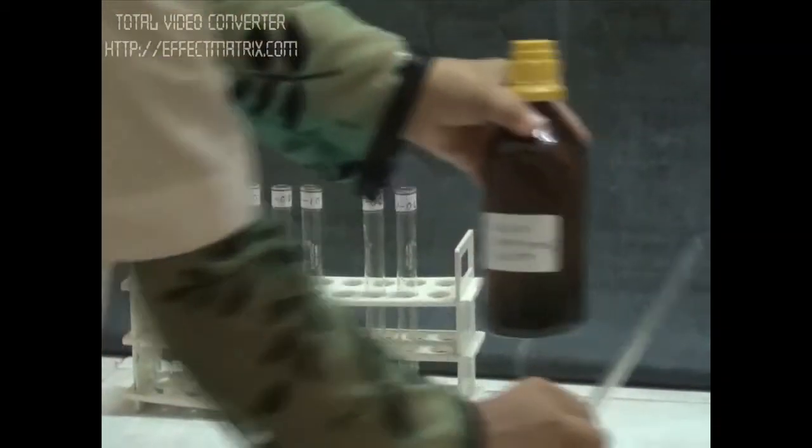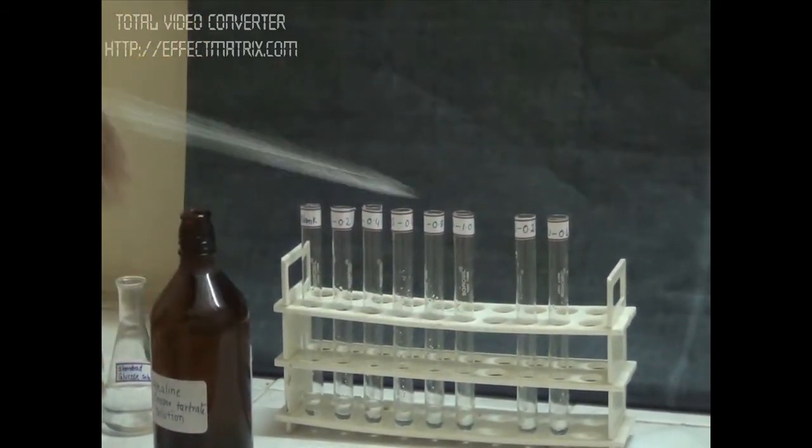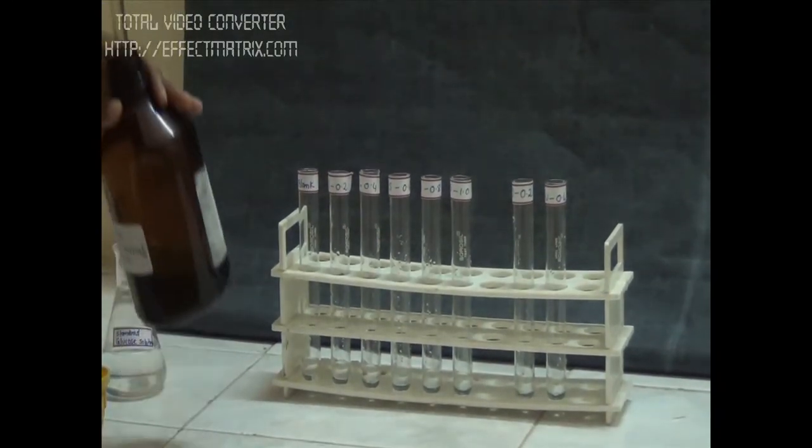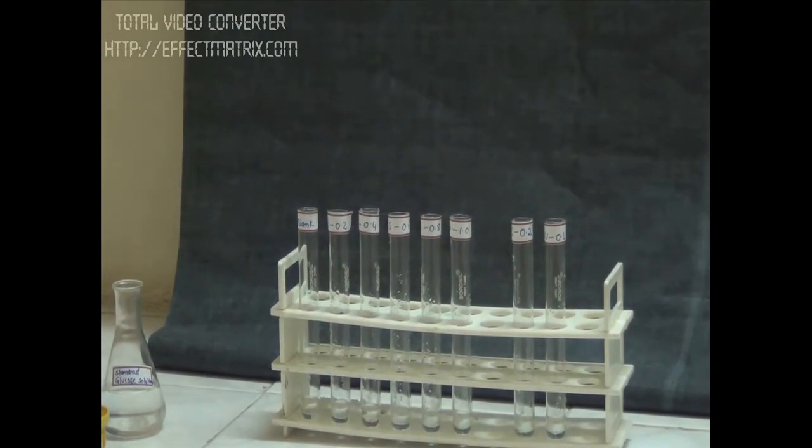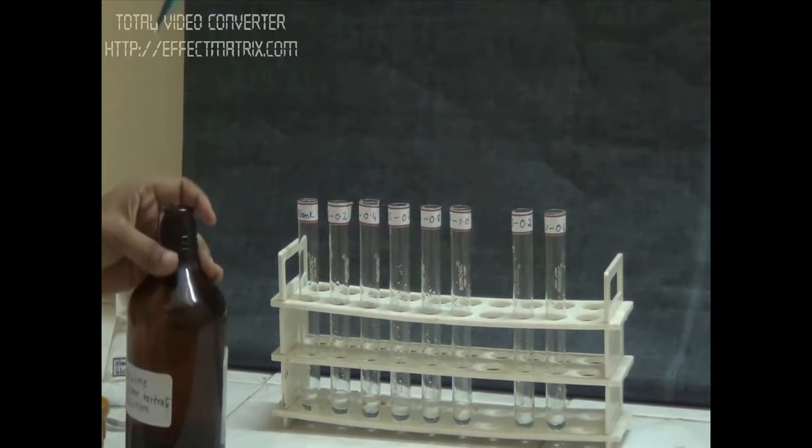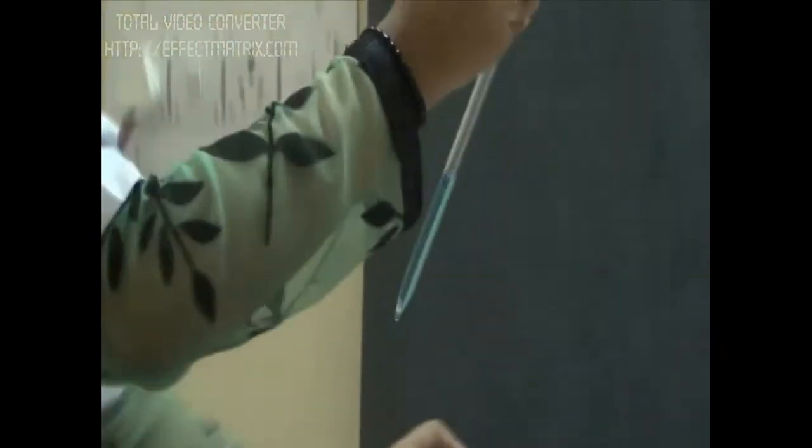Now we have to add our reagent, alkaline copper tartrate solution. What it does is our copper tartrate solution has cupric ions in it. This cupric ion is going to react with our reducing sugar, and our reducing sugar is going to reduce it to cuprous oxide. We have to add 2 ml of cupric copper tartrate to every tube, so it will convert our cupric ions to cuprous oxide.